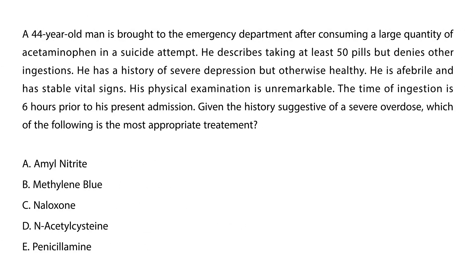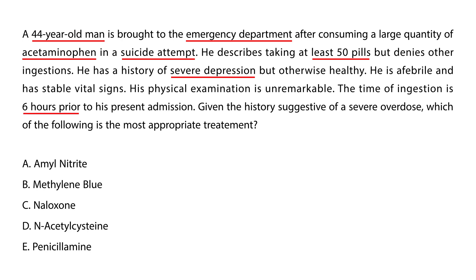Let's look at some clinical vignettes. A 44-year-old man is brought to the emergency department after consuming a large quantity of acetaminophen in a suicide attempt. He took at least 50 pills, denies other ingestions, and has a history of severe depression but is otherwise healthy. He is afebrile with stable vitals; the physical exam is unremarkable. Ingestion was six hours prior. Given the severe overdose history, the most appropriate treatment is N-acetylcysteine, the antidote for acetaminophen toxicity.